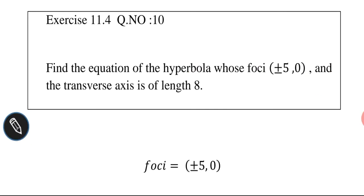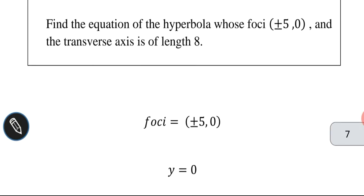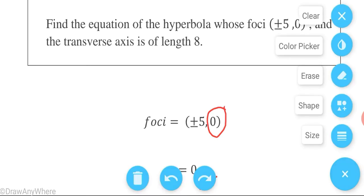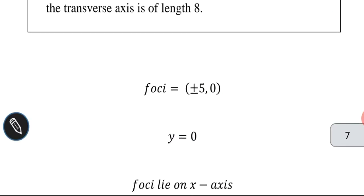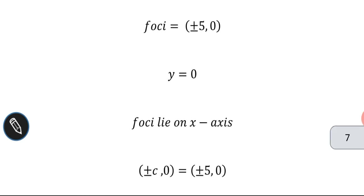Given foci is plus or minus 5 comma 0. Note that the value of the y-coordinate is 0, which means the axis of foci is the x-axis because the y-coordinate is 0. So we can write: foci lie on the x-axis.